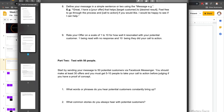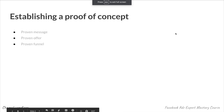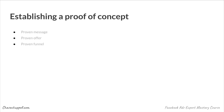We talked about establishing a proof of concept — it's really identifying a proven message that resonates with people in Facebook Messenger and really having a proven offer that can get people to get on a call with you, go to your landing page and capture their email, or make a purchase. As long as you're moving people forward in the process, building up interest, and getting people to make purchases, that really shows that you do have a proof of concept. Without a proven funnel, your Facebook ads can only do so much. The proof of concept really helps with identifying areas of improvement when sending people to your landing pages and purchase pages.